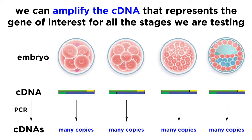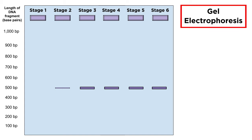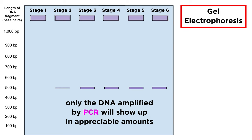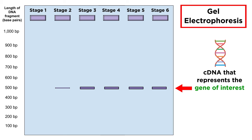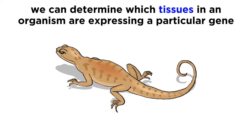We can repeat this process for each of the stages of embryonic development we are testing. Then we can perform gel electrophoresis with a column for each stage of development, whereby only the amplified product will be relevant, since it will be so much more abundant than everything else. If we get a lot of the gene of interest, it means that the mRNA it produces was present in the sample during that stage, because its presence was necessary in order to get the corresponding cDNA in the first place. So this is how we can tell when a particular gene is being expressed in the embryo.